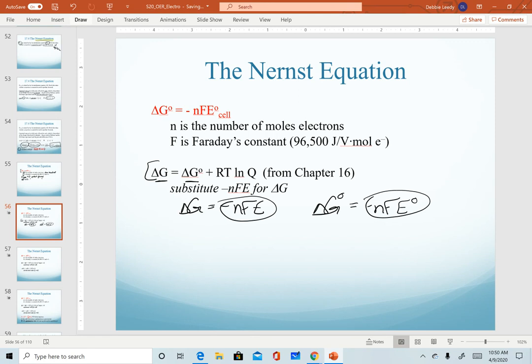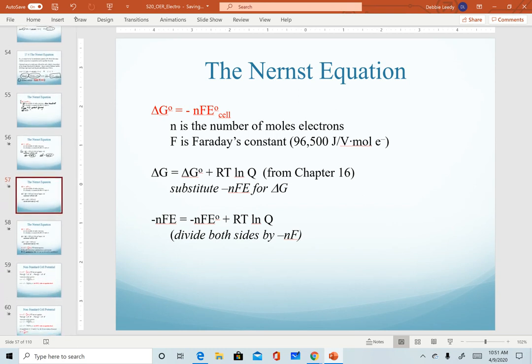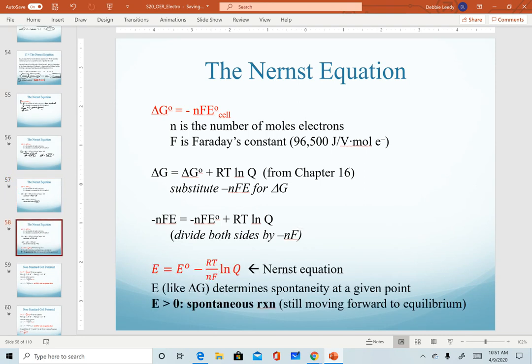So if we plug both of those into our equation, we get something that looks like this, a little ugly and a little awkward. And so if we divide both sides of our equation by negative nF, that becomes this much nicer and neater equation. So this one is referred to as the Nernst equation. It's not labeled as such on your equation sheet, but it's often referred to by name.